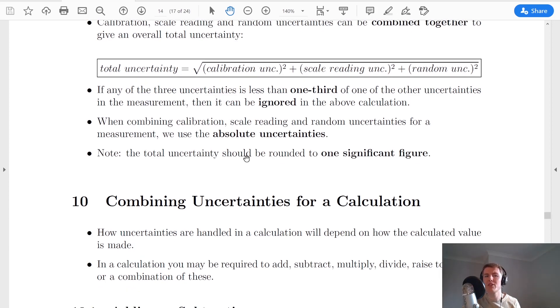The next thing to mention is that when we're combining calibration, scale reading and random uncertainties in this way for a measurement, we use the absolute uncertainty. So we don't actually use percentage uncertainties in this case.